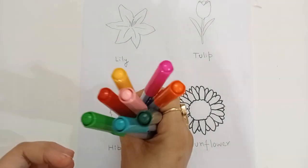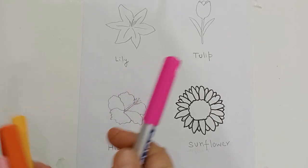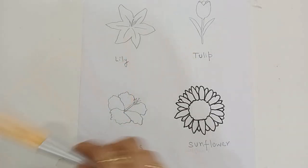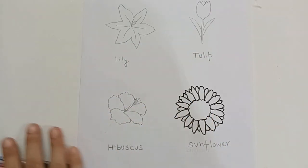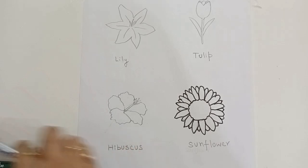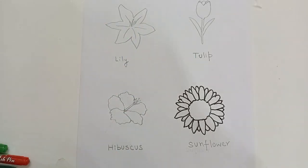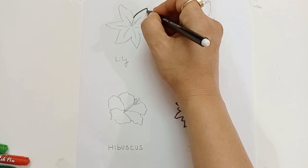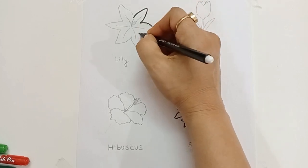Today we learn some colors and some flower names: pink color, orange color, yellow color, light pink color, dark green color, red color, green color, peacock green color.